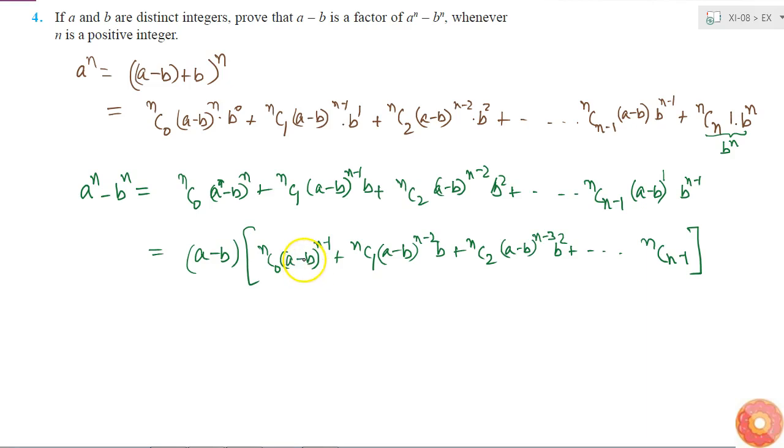Or even if it is, okay, a-b may or may not be 0, but it is still an integer. So this term will be an integer, this term is an integer, and similarly all the terms are integers. So sum of integers will also be an integer. Therefore this is entirely an integer, right?